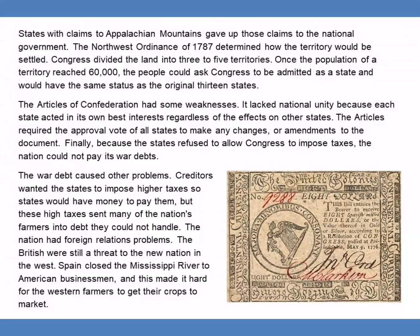The Articles of Confederation had some weaknesses. It lacked national unity because each state acted in its own best interests, regardless of the effect on other states. The Articles required the approval vote of all states to make any changes or amendments to the document. Finally, because the states refused to allow Congress to impose taxes, the nation could not pay its war debts.